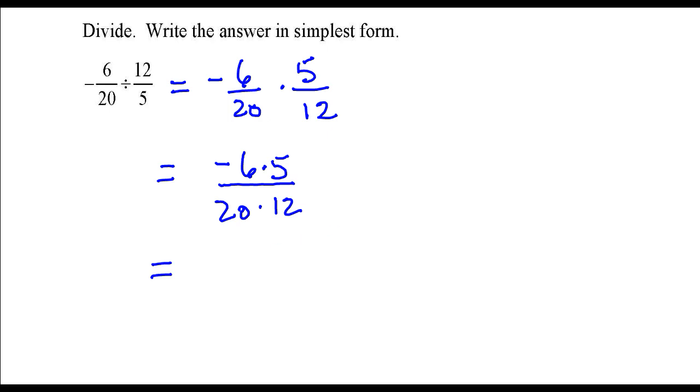Now I'm going to simplify this. I'm going to divide out factors common to both numerator and denominator. 6 goes into itself once, it goes into 12 twice. 5 goes into itself once, it goes into 20 four times.